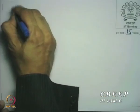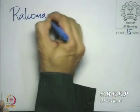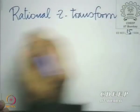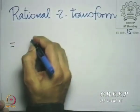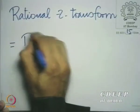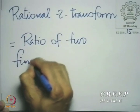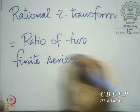We are going to spend quite a bit of time on the rational Z-transform because that occurs very frequently in our use of LSI systems. Let us recall a couple of points from the previous lecture. In the previous lecture we talked about the rational Z-transform — let me just recapitulate what it means.